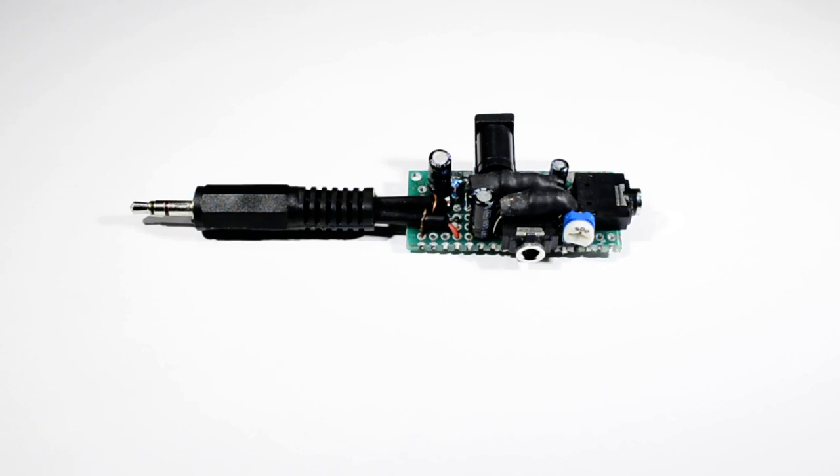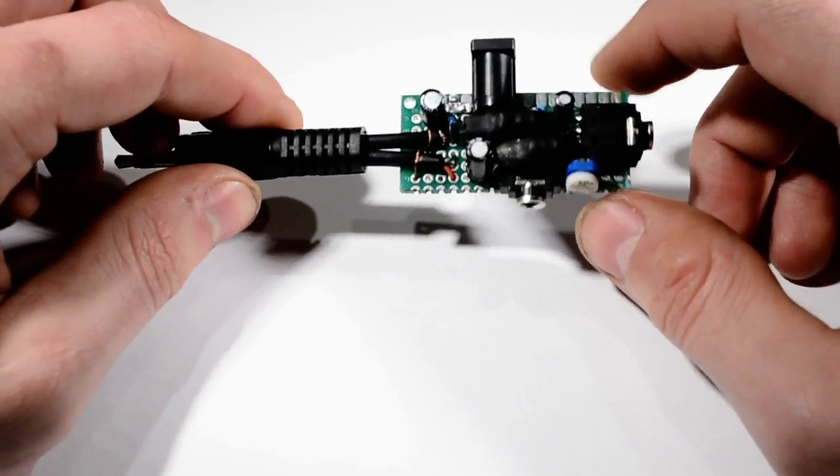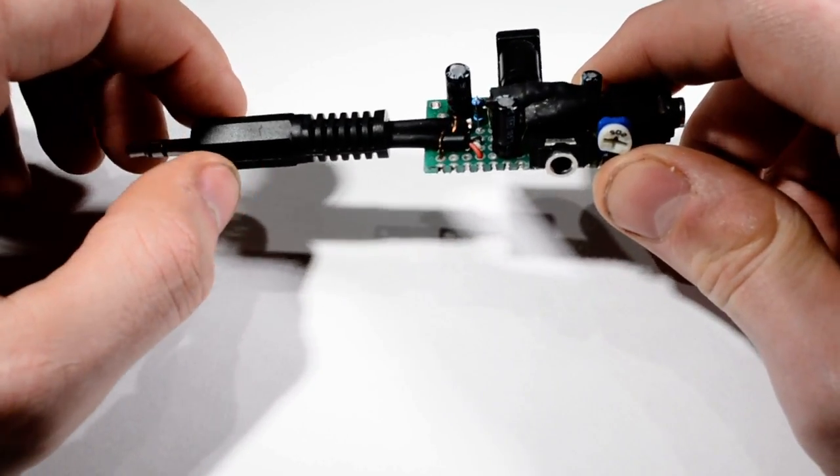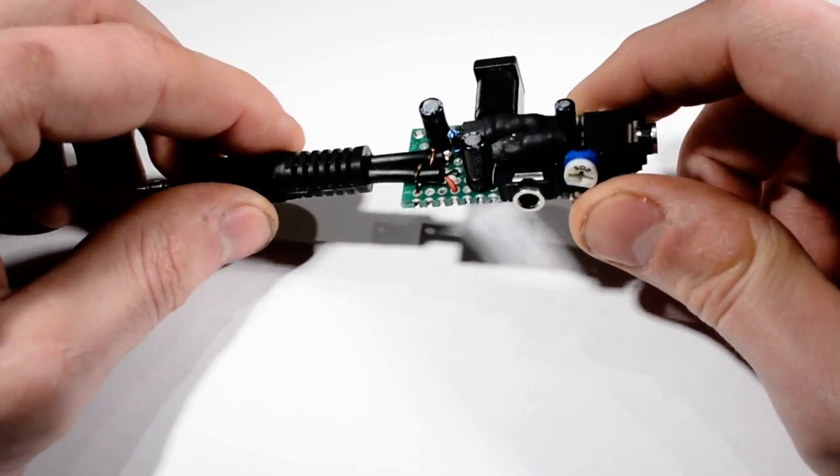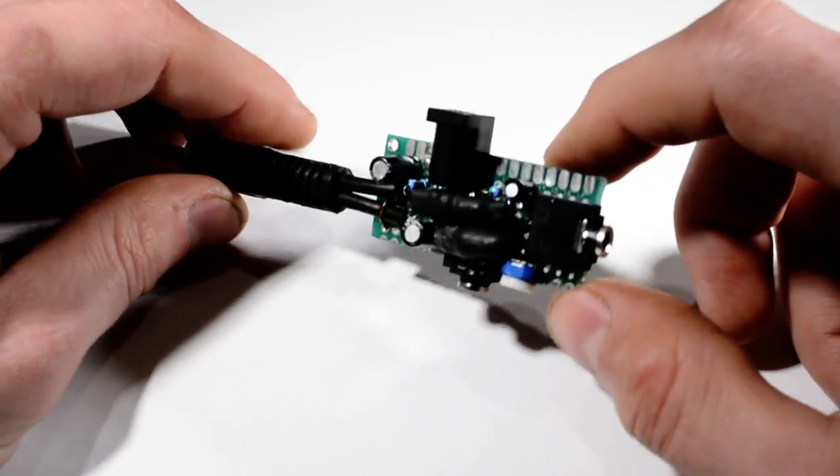Here it is, my ridiculous prototype. It's a lot messier than it needed to be because I built it in mono to begin with, then realized it probably would have been better in stereo, which means two LEDs and two LDRs. They're inside the black heat shrink here to keep out ambient light.